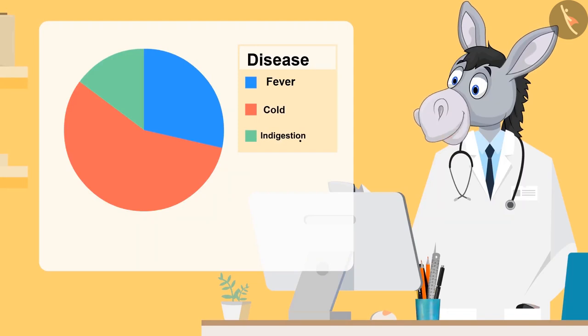As you can see in the chart, number of children who got sick due to cold are represented by red color. Number of children who got sick due to fever are represented by blue, and the number of children who got sick due to indigestion are represented by green color.